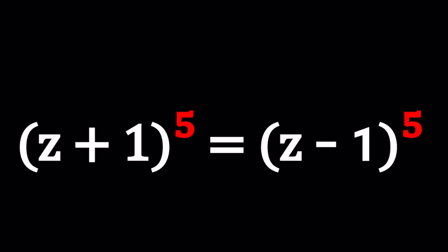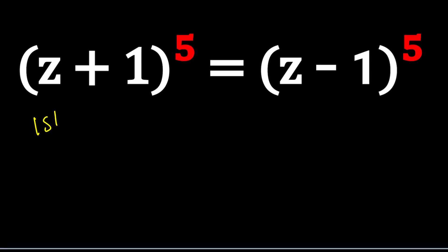We're going to be solving this equation: Z plus one to the fifth power equals Z minus one to the fifth power. And I'll be presenting two methods. Actually, there's a third method that I also want to briefly talk about. Maybe I'll mention that at the end. Great, let's go ahead and start with the first method.